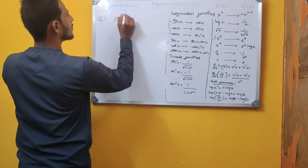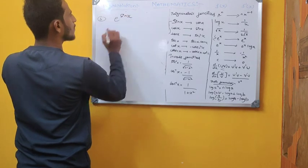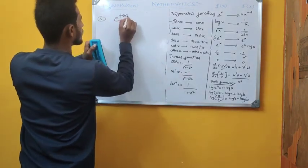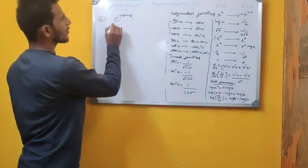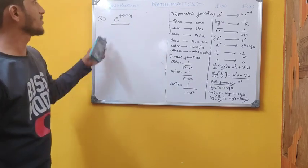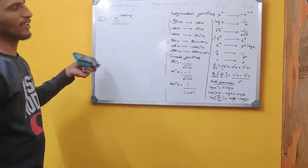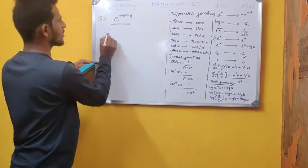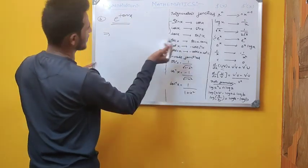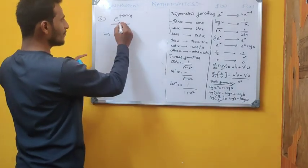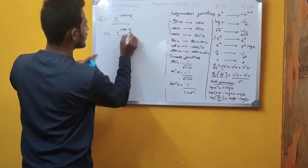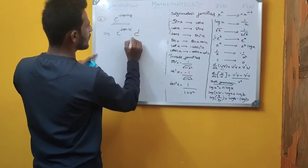Next example: differentiate e^(tan x). This is in the form e^x. So e^(tan x) differentiated gives e^(tan x) times the differentiation of tan x, which is sec²x. So the answer is e^(tan x)·sec²x.